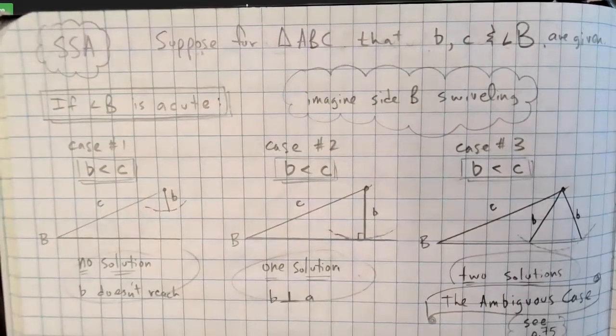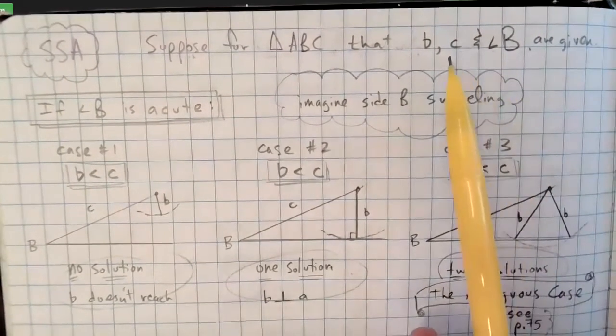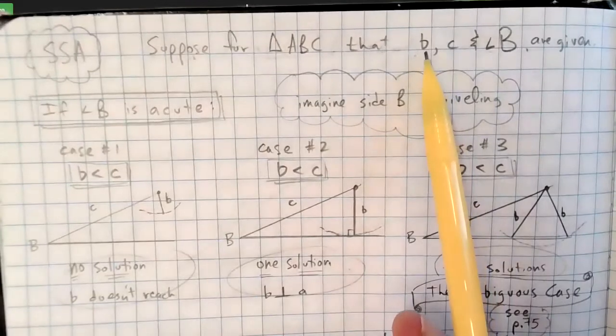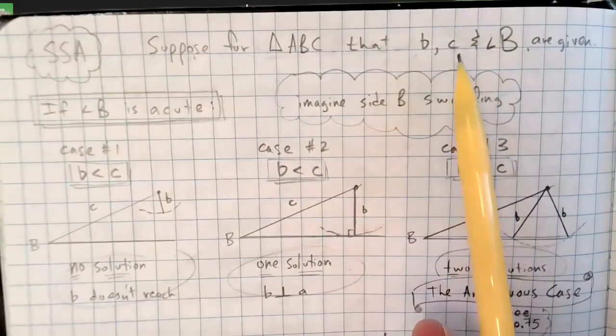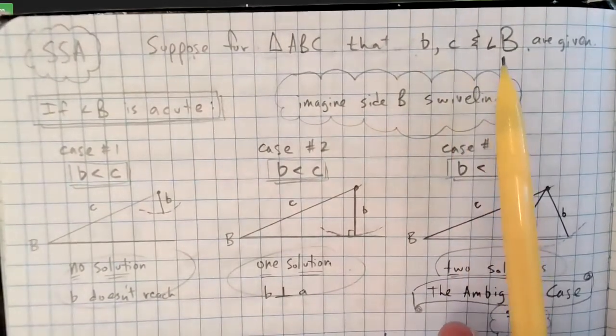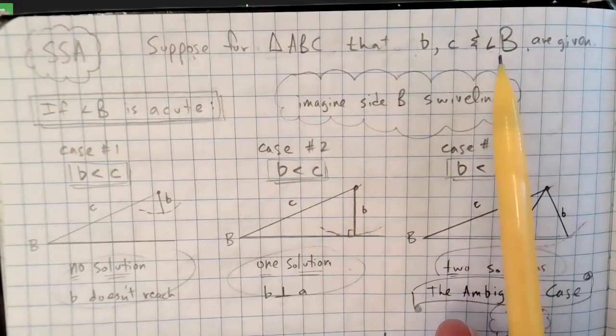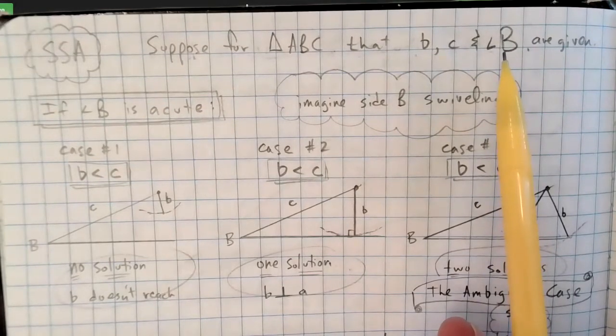So we're talking about side-side-angle. And let's say, suppose, it could be A, B, C, whatever. But for simplicity's sake, we're going to say, I'm giving you side b, side c, and angle B. Those are the ones that I'm giving you. And we're going to look at two different sections, one where angle B is acute, and one where angle B is obtuse.